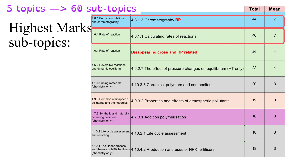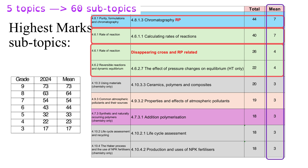Very closely behind is the calculating rates of reaction skill — either by the mathematical method or by working out the gradient of a tangent from a graph. Then we have the disappearing cross required practical, and dynamic equilibrium (specifically how pressure affects a system at equilibrium), both worth on average four marks each year. This table shows the nine most important subtopics for revision. Scoring only those nine out of 60 would yield 37 marks on average — enough for a strong grade five — showing just how important these nine subtopics are.